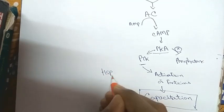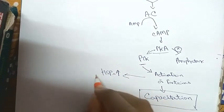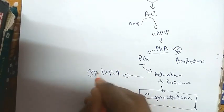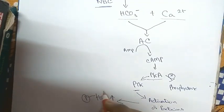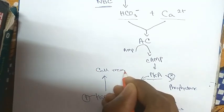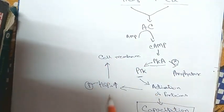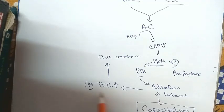Through this PKA activation pathway, certain proteins are activated. One of those is a pair of heat shock proteins (HSPs). These phosphorylated HSPs move to the cell membrane, where they access proteins that recognize zona pellucida proteins or zona pellucida surface markers.